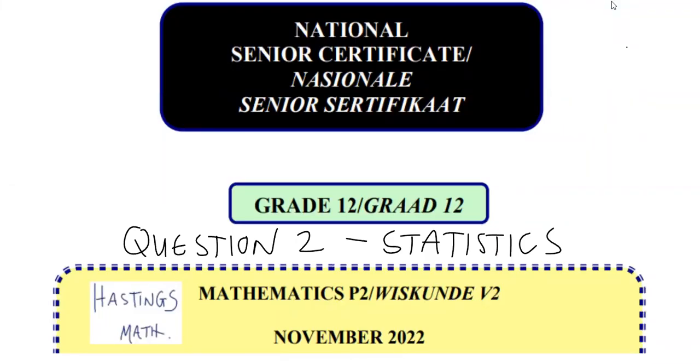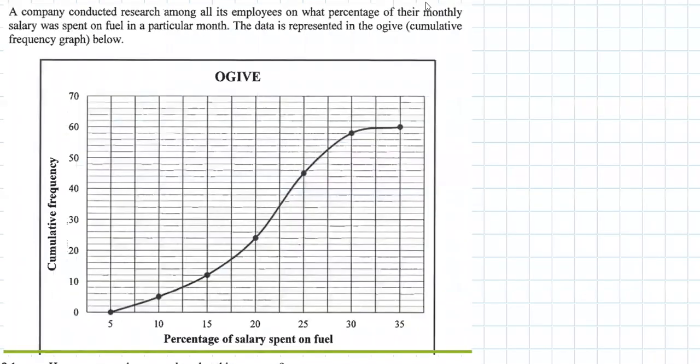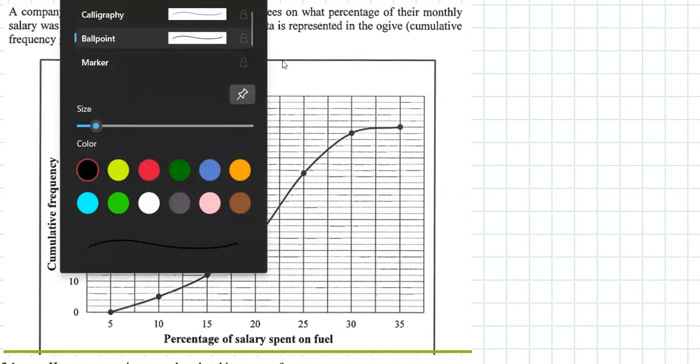This is the NSC DBE November 2022 Question Paper 2, Question 2, still working with statistics. A company conducted research among all its employees on what percentage of their monthly salary was spent in a particular month on fuel. The data is represented in the ogive, the cumulative frequency graph below.